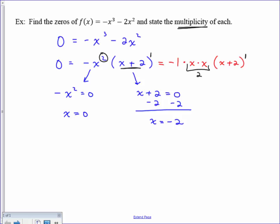And so here, we would say that x equals 0 is a zero of our polynomial, and it has a multiplicity of 2. Here, we would say x equals negative 2 is a zero of our original function, and it has multiplicity of 1.